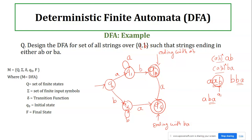For q2 getting 'b': we arrived at q2 with 'ab', and now getting 'b' means it is not ending with 'ab' or 'ba' yet. Since 'b' is already there and we need 'a' to end with 'ba', we need to move to a state that can generate 'a' and reach q4. That state is q3. So from q2, 'b' goes to q3. Now q2 is done with both 'a' and 'b'.